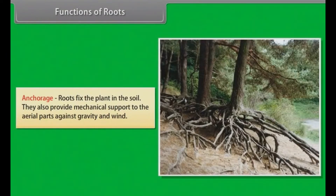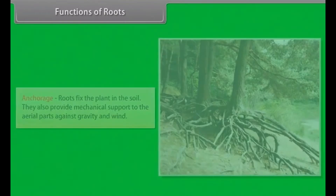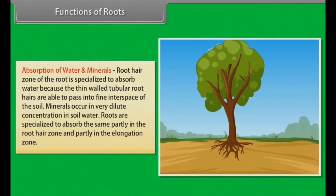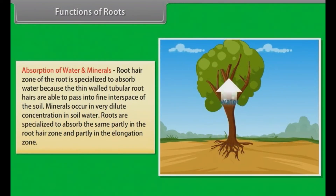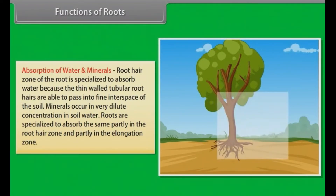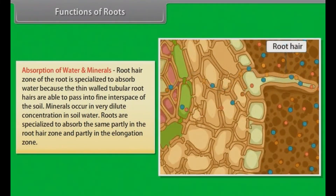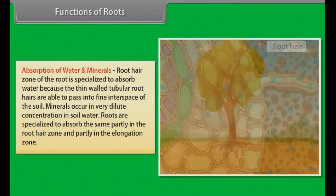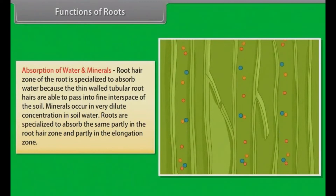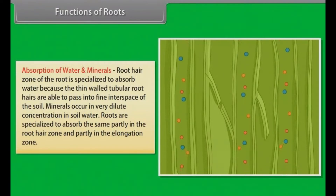Functions of roots. Anchorage: Roots fix the plant in the soil and provide mechanical support to the aerial parts against gravity and wind. Absorption of water and minerals: The root hair zone is specialized to absorb water because the thin-walled tubular root hairs are able to pass into fine interspaces of the soil. Minerals occur in very dilute concentration in soil water. Roots are specialized to absorb them, partly in the root hair zone and partly in the elongation zone.